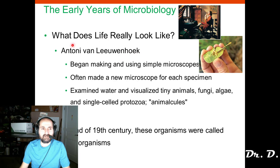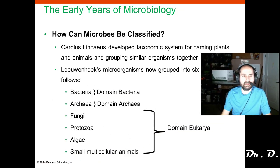Please learn all of the names in chapter 1. For example, Anthony van Leeuwenhoek — please know what his contribution was, which was to microscopy with his early pinhole microscope. You should also know what types of creatures are studied by microbiologists. Bacteria and archaea are prokaryotic and in their own domains, and then you have the domain Eukarya. Microorganisms include fungi, protozoa, algae, and other small multicellular animals.